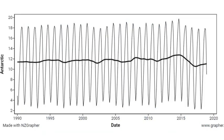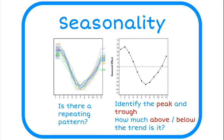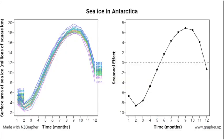To get the graph on the left, what they've done is taken one year's worth of data and copied and pasted it, then taken the next year's data and copied and pasted that, and so on — cutting the data into slices and stacking them on top of each other. To get the graph on the right, they've taken the average through the middle of that stacked data.